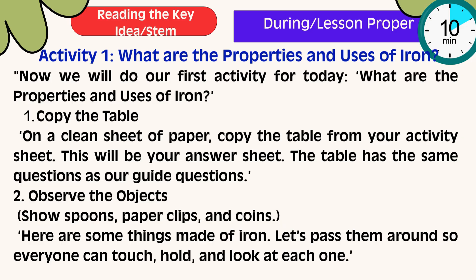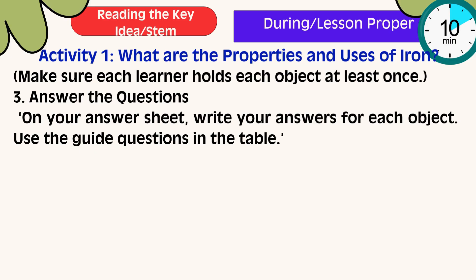First, copy the table. On a clean sheet of paper, copy the table from the activity sheet. This will be your answer sheet. The table has the same questions as our guide questions. Number 2: Observe the objects. Here are some things made of iron. Let's pass them around so everyone can touch, hold, and look at each one. Number 3: Answer the questions. On your answer sheet, write your answers for each object. Use the guide questions in the table.